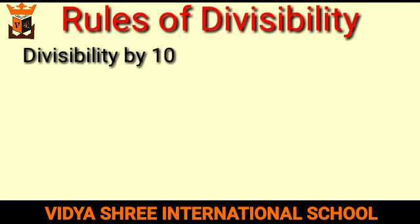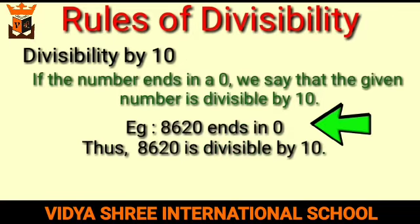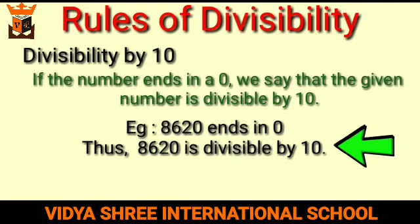Next is divisibility by 10. If the number ends in 0, we say that the given number is divisible by 10. For example, 8620 ends in 0, thus 8620 is divisible by 10.